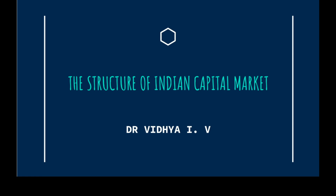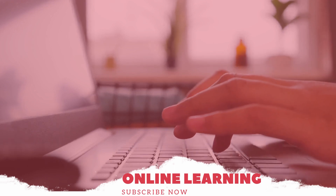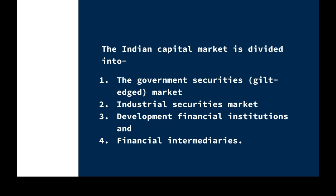Dear students, welcome to our next class. Today we are discussing the structure of the Indian capital market. On the basis of the types of institutions involved, it can be classified into various categories such as the government securities market or gilt-edged market, industrial securities markets, development financial institutions, and financial intermediaries.